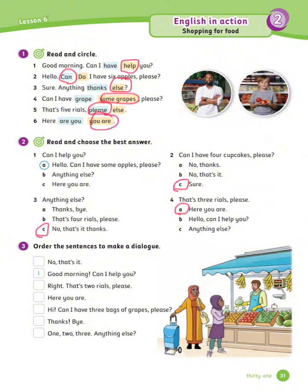Number 3: Anything else? — C: No, that's it, thanks. Number 4: That's 3 riyals, please. — A: Here you are.